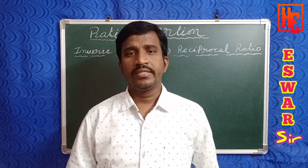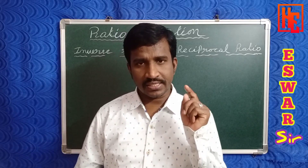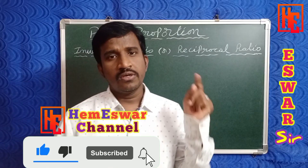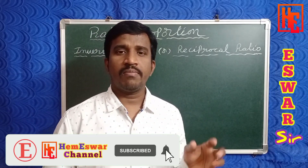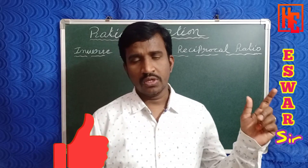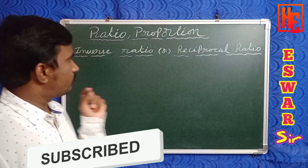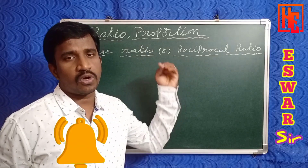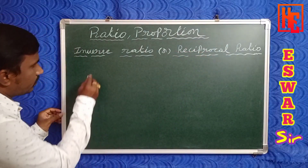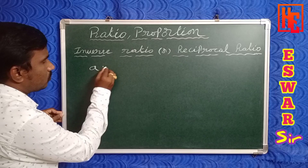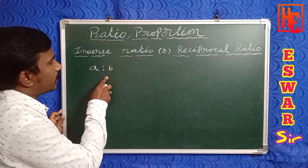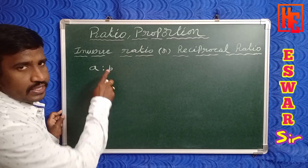Hi guys, welcome back to our channel. In this video we're going to discuss ratio and proportion. In this chapter we'll discuss some types of ratios. First of all, inverse ratio or reciprocal ratio: suppose given a is to b, the inverse ratio or reciprocal ratio of a is to b is written as 1 by a is to 1 by b.